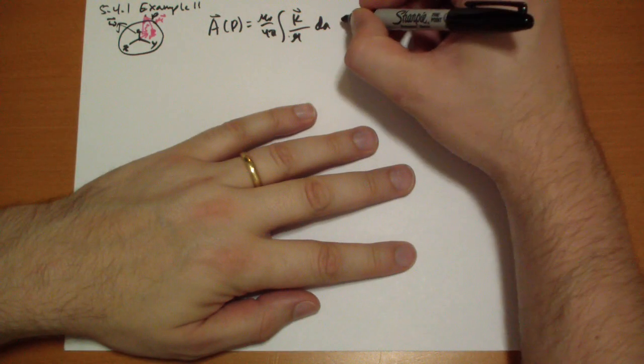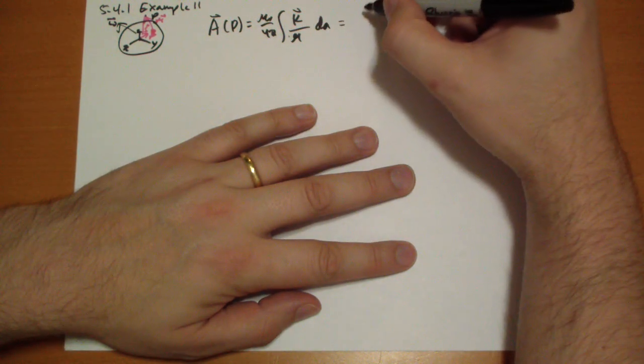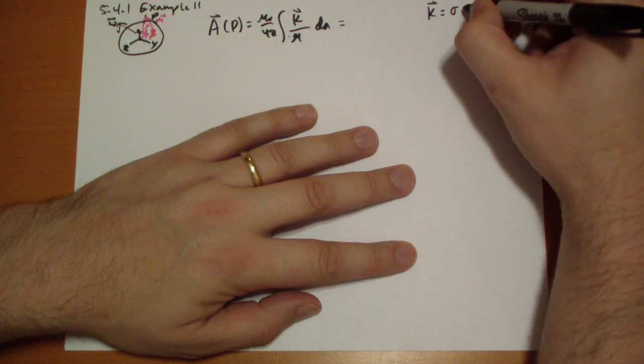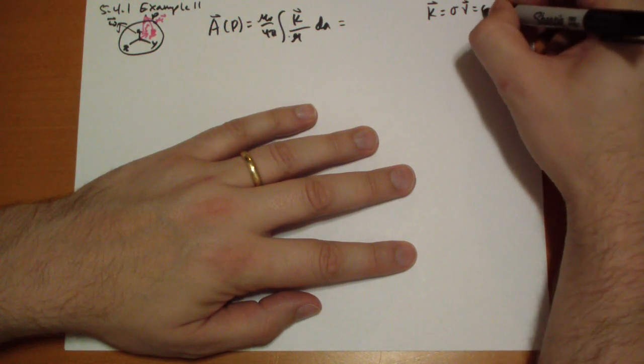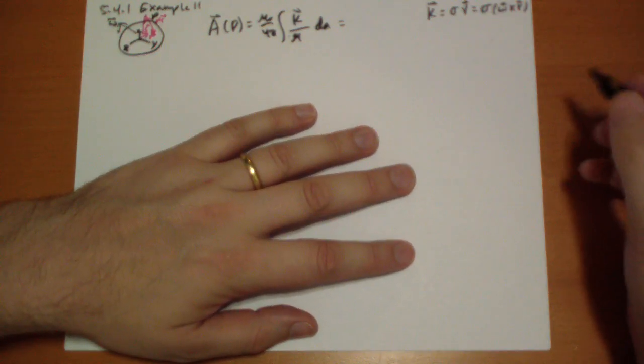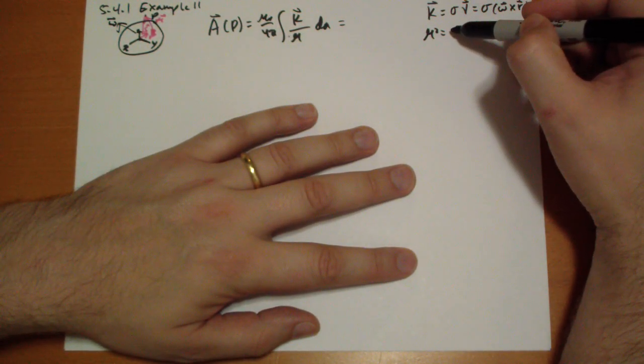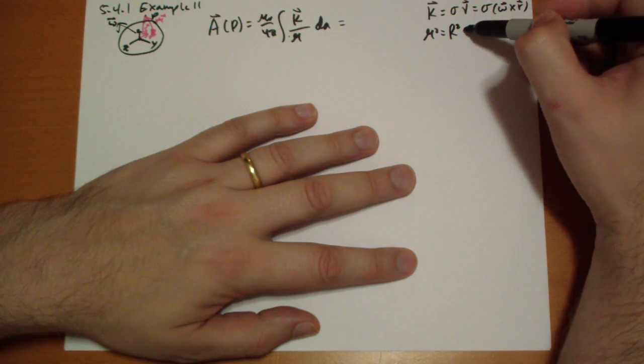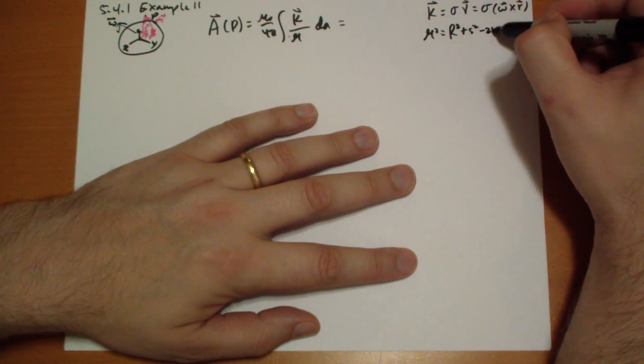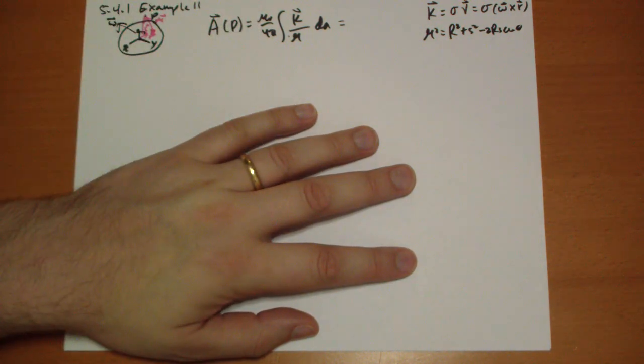So let's rewrite this in terms that we're well familiar with. So K is going to be the surface charge times the velocity, which is just the surface charge times omega cross R vector. And R squared is equal to the radius of the circle squared plus the distance from the origin, the point is, minus 2 R S cos theta, where theta is the angle here. That's theta.